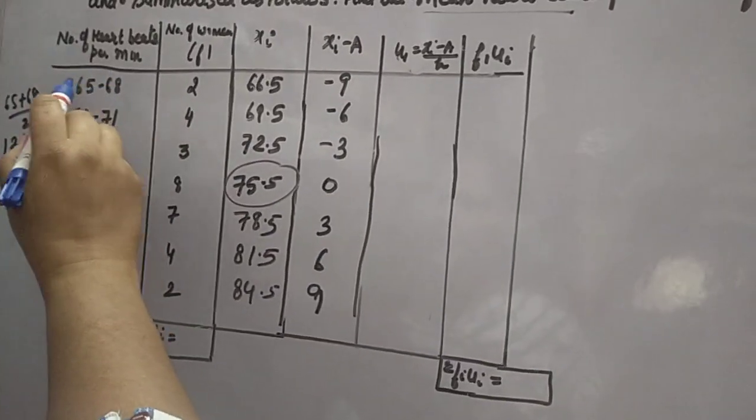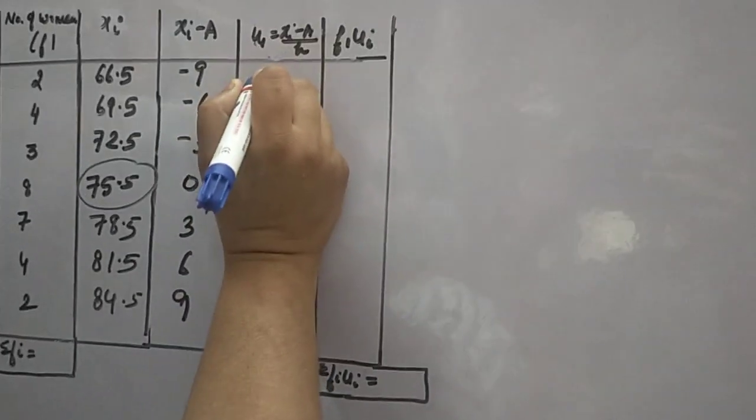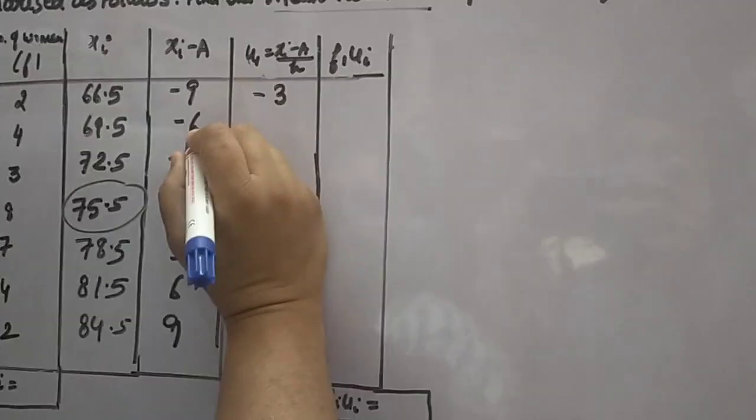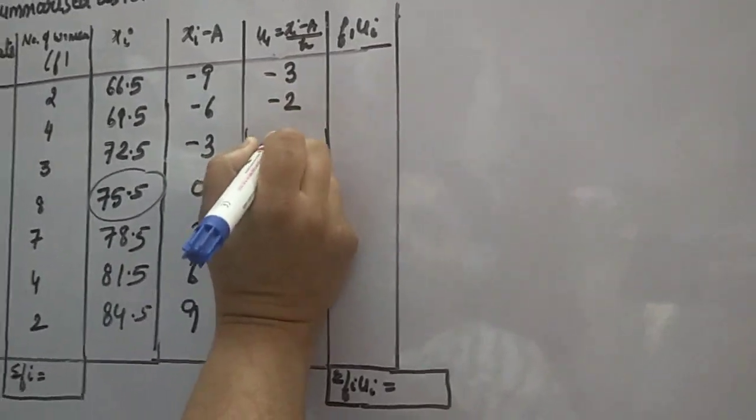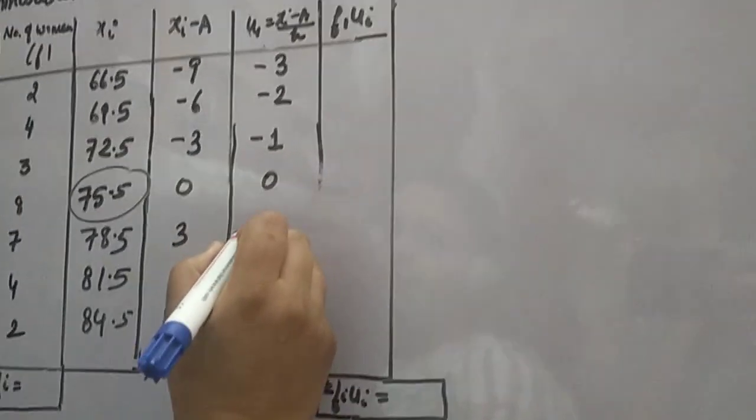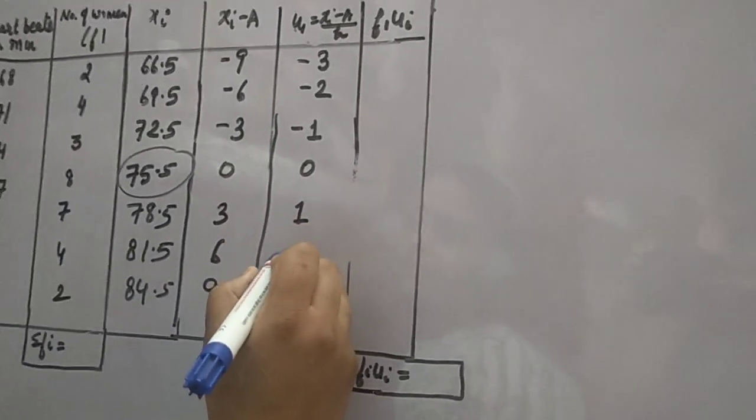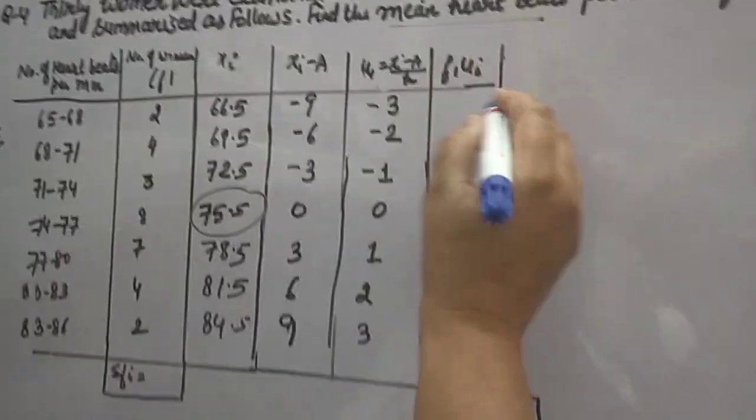Now h is upper limit minus lower limit, which is 68 minus 65 equals 3. Divide all by 3 to get ui. So minus 9 divided by 3 gives minus 3. Minus 6 divided by 3 gives minus 2. Minus 3 divided by 3 gives minus 1. 0 divided by 3 gives 0. 3 divided by 3 gives 1. 6 divided by 3 gives 2. 9 divided by 3 gives 3.